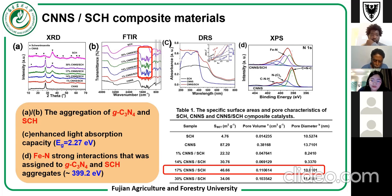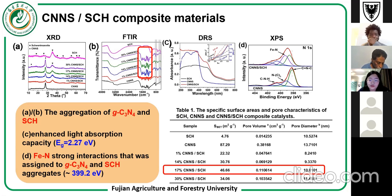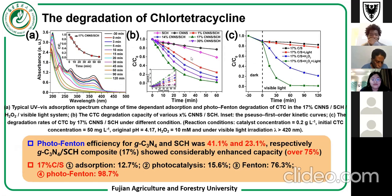We also performed nitrogen adsorption-desorption measurements. The composite with 70% carbon nitride showed the highest BET surface area, which we expect will result in better performance in the photo-Fenton reactions.